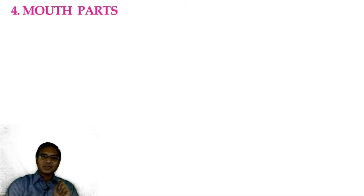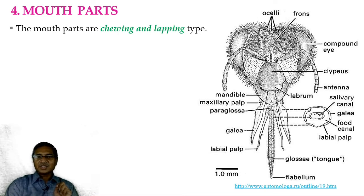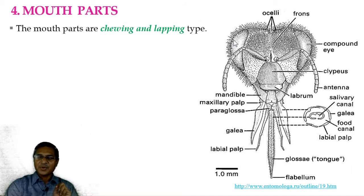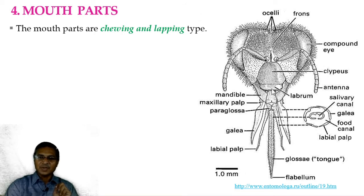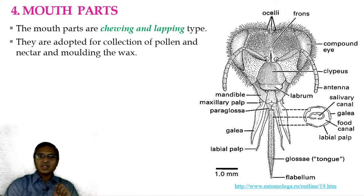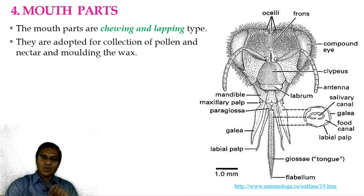The fourth region located in the head is the mouth parts. The mouth parts are chewing and lapping type. At the terminal end of the head region, the mouth parts are present. At the lateral side of the head region, the compound eyes are present. The central portion is called the frons, and the terminal anterior portion where the clypeus is present — from this clypeus the first part of the mouth is observed in the form of the labrum. The mouth parts are adapted for collection of pollen and nectar, and molding the wax — collection of pollen and nectar from flowers, and in the comb they mold the wax for construction of the comb.